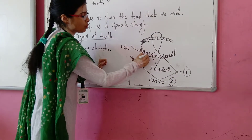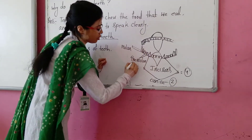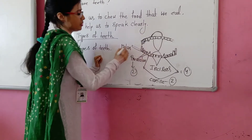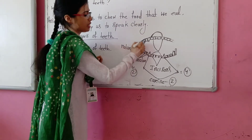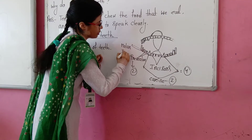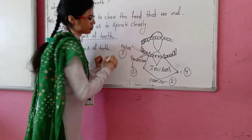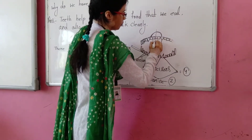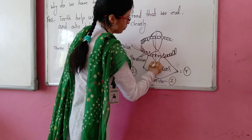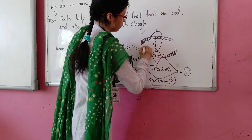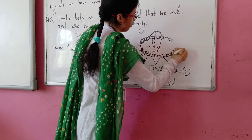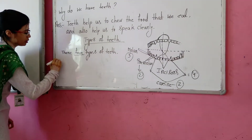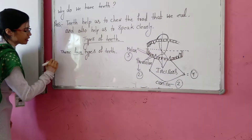To summarize: the four front teeth are incisors, the two sharp teeth beside them are canines, the two teeth beside the canines are premolars, and the three teeth beside the premolars are molars. Next, I want to tell you the dental formula.